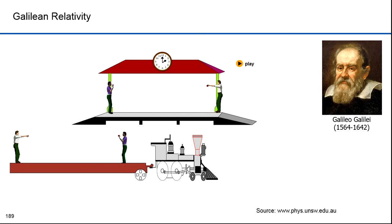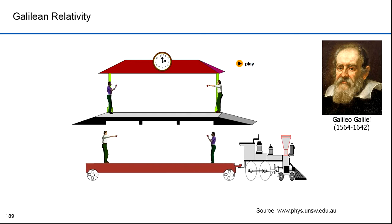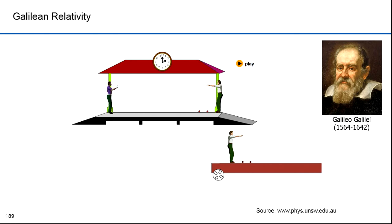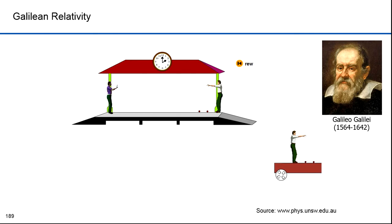Galileo asserted that the laws of physics are the same in all inertial frames. He described a ship traveling at constant velocity on a smooth sea — any observer doing experiments below deck would not be able to tell whether the ship was moving or stationary. Galilean transformations are mathematical formulas used to transform between the coordinates of one reference frame to another. The frames of reference differ only by the constant relative motion between them.